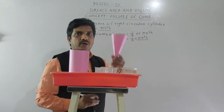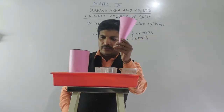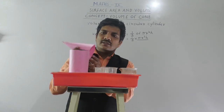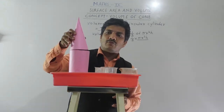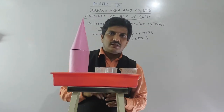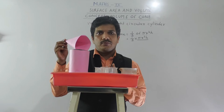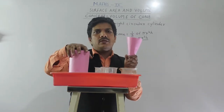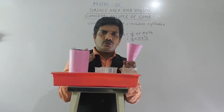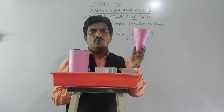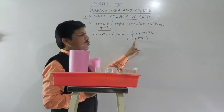We have taken the cone three times to fill the cylinder whose radius and height are equal — meaning the radius and height of the cone and cylinder are the same. So when you take the cone three times, it fills the cylinder completely. You can use water also for this activity. So volume of cone equals one by three pi r squared h.